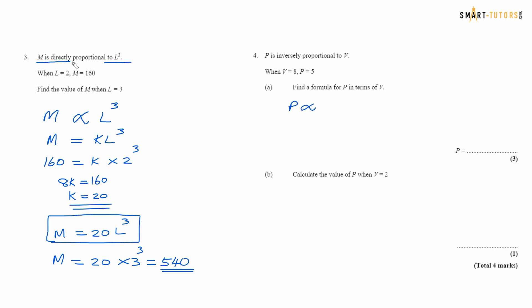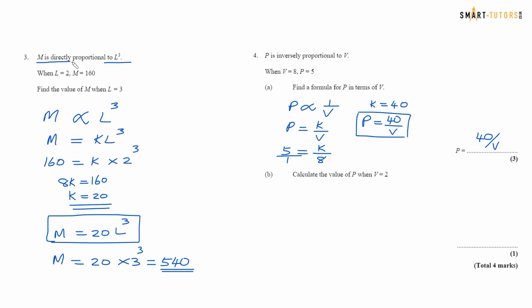Question number 4: p is inversely proportional to v, with no cube or square — just v. So p equals k over v. Given p equals 5 and v equals 8: cross multiplying gives k equals 8 times 5 equals 40. So p equals 40 over v. Now calculate p when v equals 2: p equals 40 over 2, which is 20. So the answer is 20.